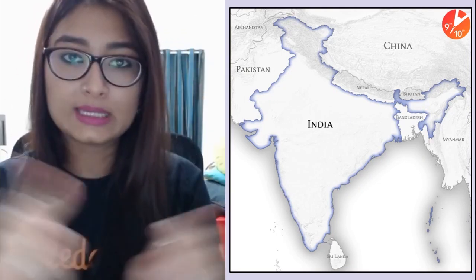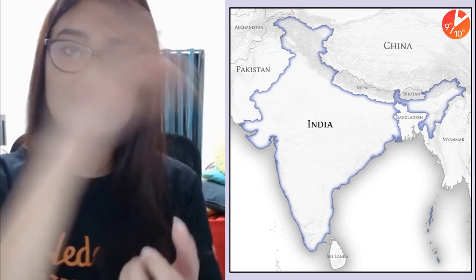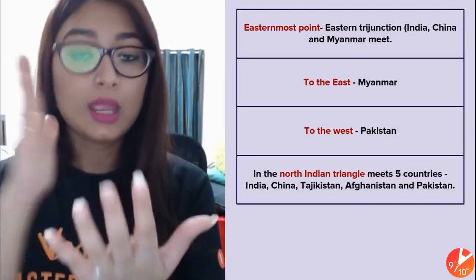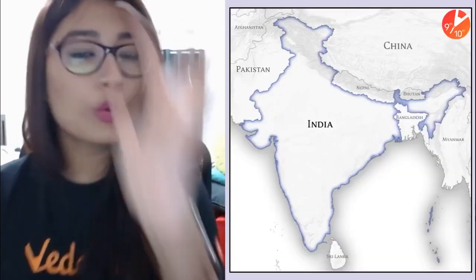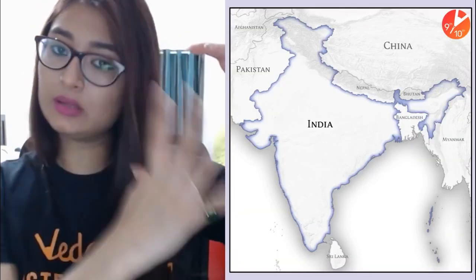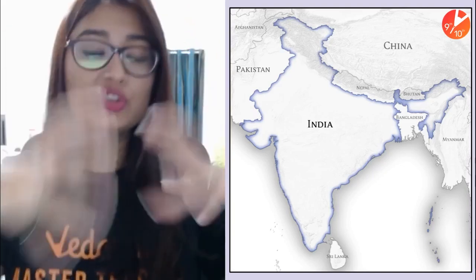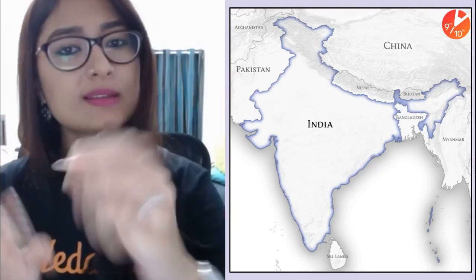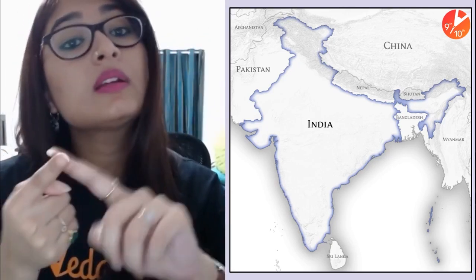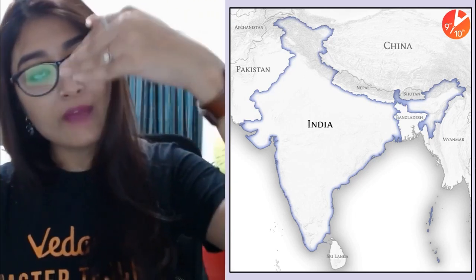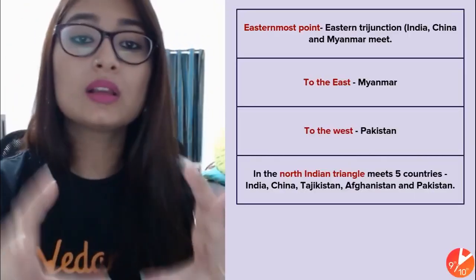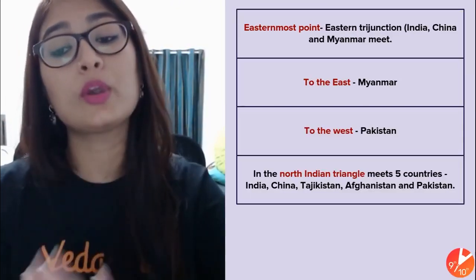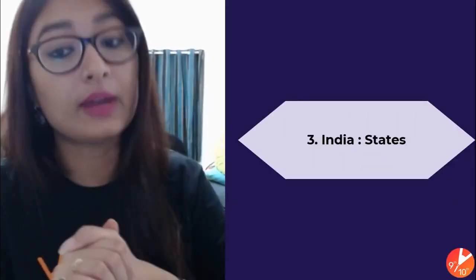We have discussed Pakistan. In the northwest there is a triangular junction point where five countries meet: India, China, Afghanistan, Pakistan, and Tajikistan. If you look at the map, India, Pakistan, and China are very clearly visible. Afghanistan forms a small shared boundary, and beyond that is Tajikistan. So at this northwestern triangle of India, there is a meeting point of five countries.